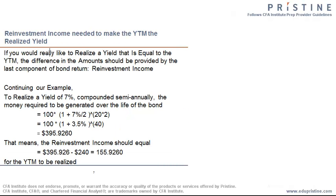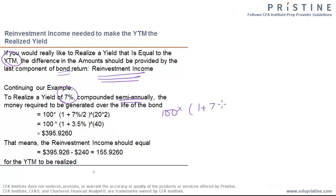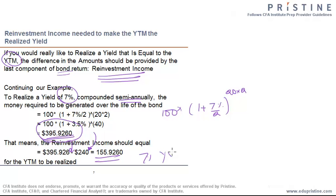If you would like to realize a yield equal to the YTM, then the difference in the amounts should be provided by the last component of the bond's return, which is its reinvestment income. Continuing from our example, to realize a yield of 7% compounded semiannually, the money required to generate over the life of the bond would be 100 times (1 plus 7% divided by 2) for 20 years semiannually, which works out to $395.93 approximately. So the reinvestment income should be the required amount minus the amount generated by the bond, which was $240 — meaning reinvestment income should equal $155.93 in order for the 7% YTM to be realized.